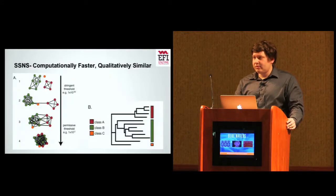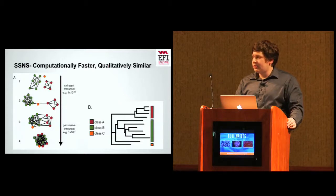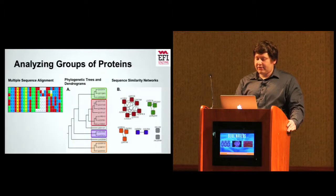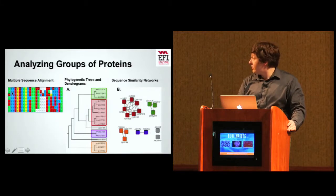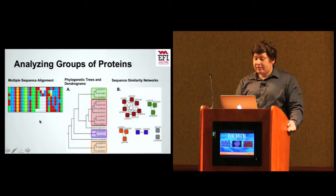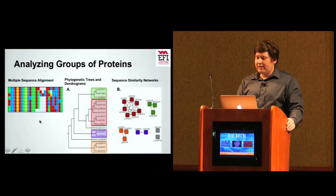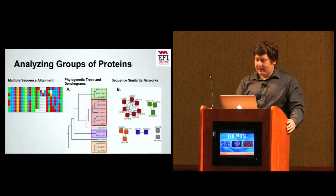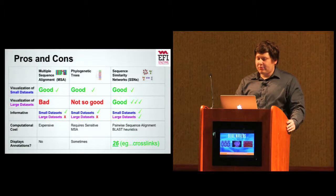Sequence similarity networks are qualitatively similar to phylogenetic trees, which are often used to visualize groups of proteins, but they're a lot computationally faster to create. There are multiple ways to analyze different groups of proteins, such as multiple sequence alignment, phylogenetic trees and dendrograms, and sequence similarity networks. They each have their own pros and cons, and they each have their own place.